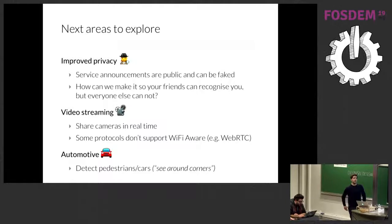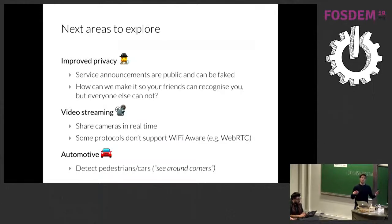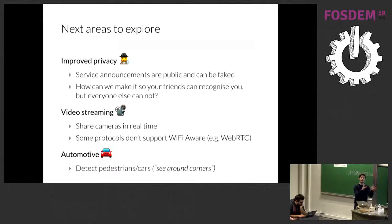The last future area is the automotive sector. The basic idea is that if you can detect other pedestrians because of their cell phone, or if you can detect another car, you can have a car that can see around corners. If you know you're going to turn right but you get a signal from somebody who's crossing the street, the car can already detect that and warn you even before you make the turn.